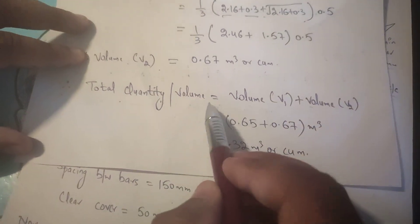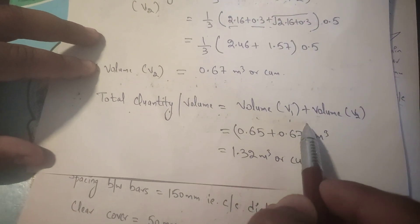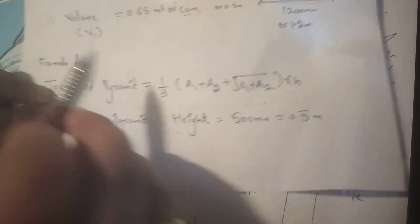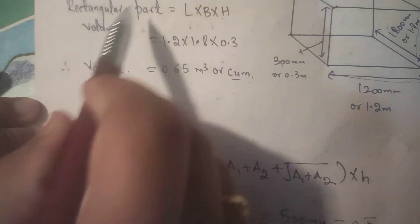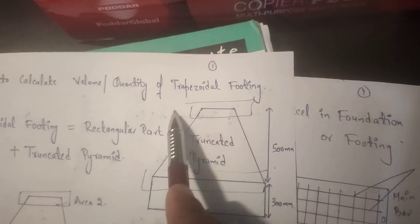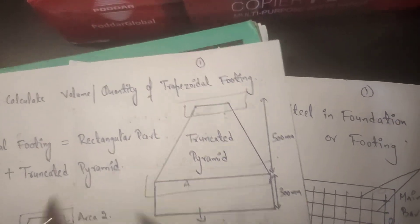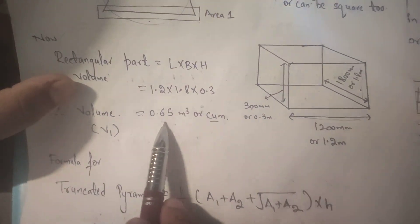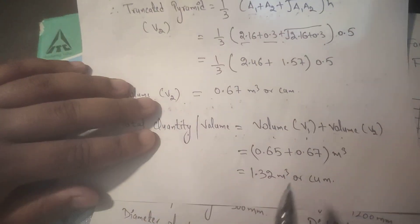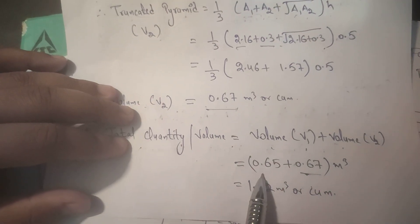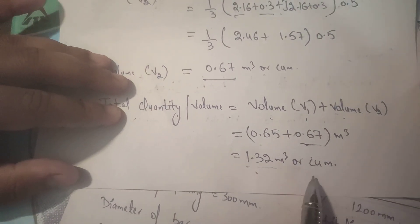Therefore, the total quantity or volume equals Volume 1 (rectangular part) plus Volume 2 (truncated pyramid). Volume 1 was calculated as 0.65 m³ and Volume 2 was 0.67 m³. Therefore our total volume comes out to be 1.32 cubic meters.